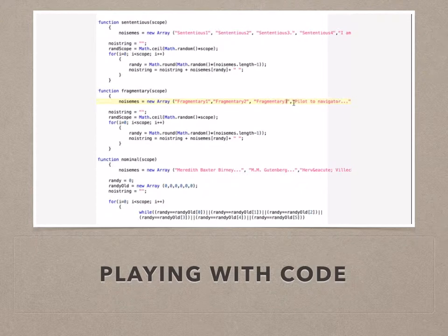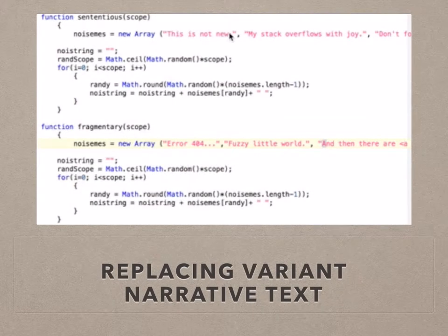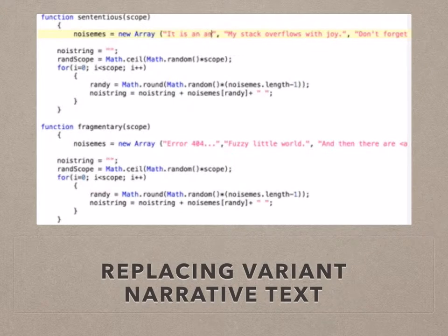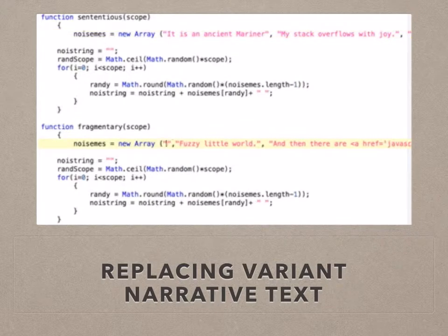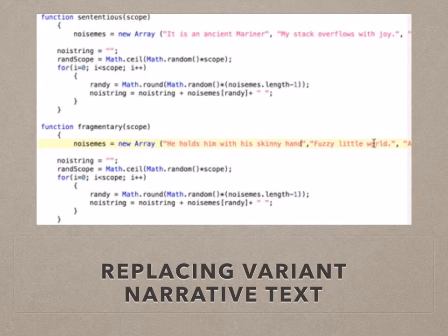We hope in the future to be able to make a version that brings this nominal function back into play. For our second intervention, we chose to replace the variant narrative text in those arrays with the text of 'Rime of the Ancient Mariner.' We chose it because we felt there was a kinship between the two texts, and because it had enough text to mine for the project. We stripped out Moulthrop's variant text first, and then input lines from the poem that were structurally similar to the fragments that Moulthrop used, so that theoretically, sentences pieced together between the static text and our new variant text would still make sense.